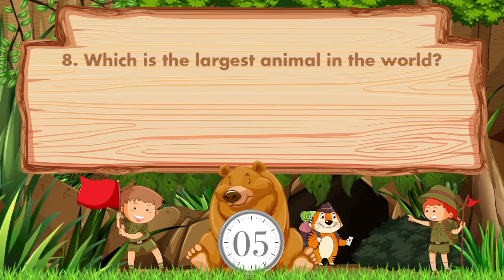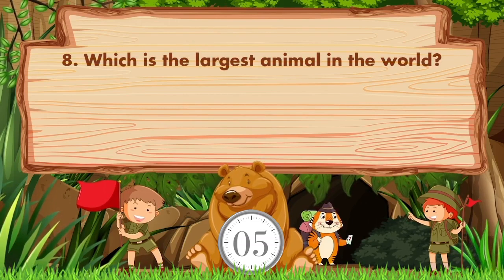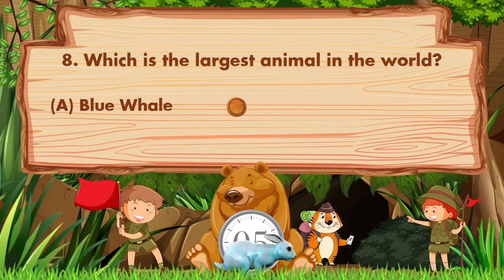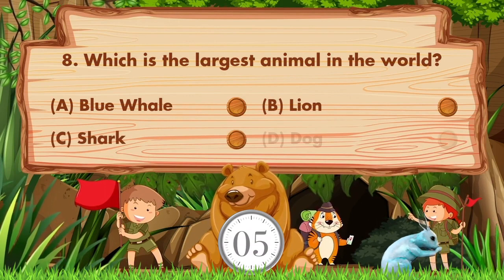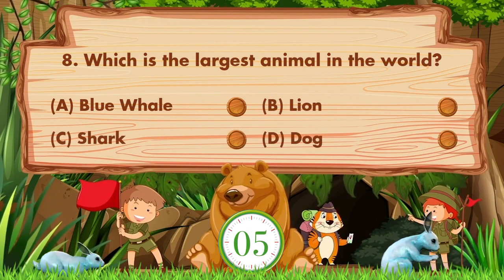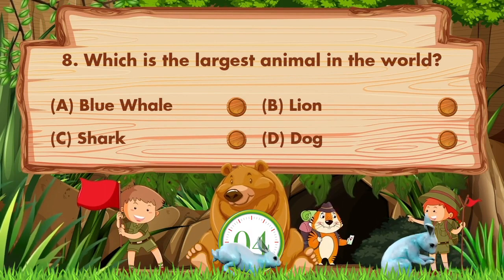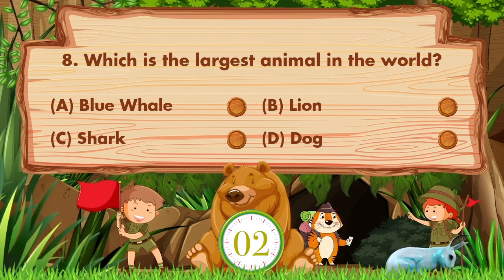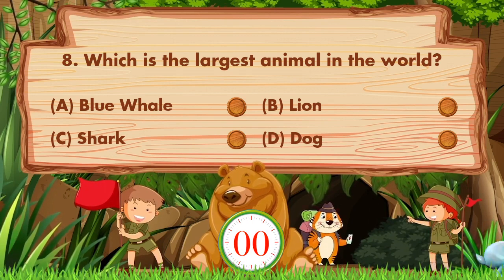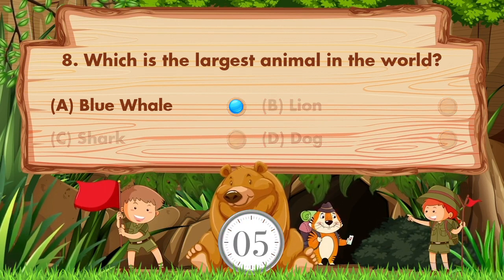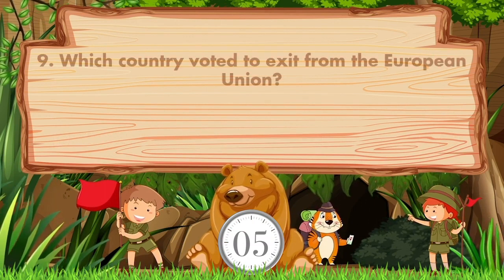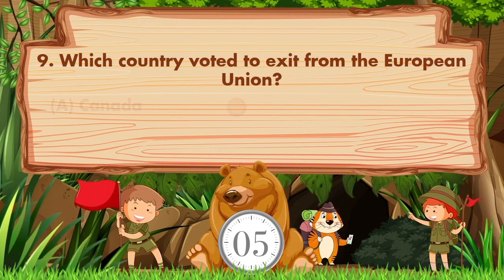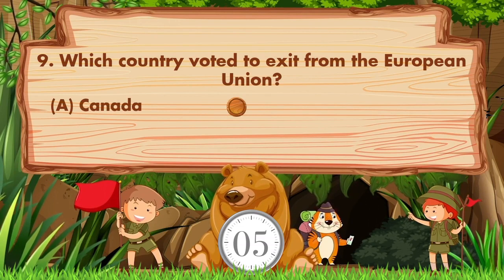Which is the largest animal in the world? Option A is blue whale, B is lion, C is shark, D is dog. The answer is option A, blue whale.